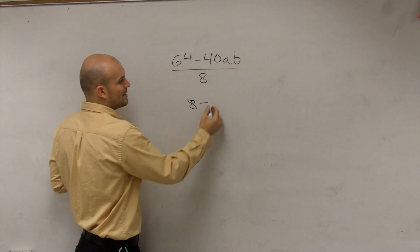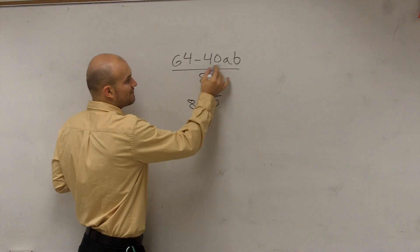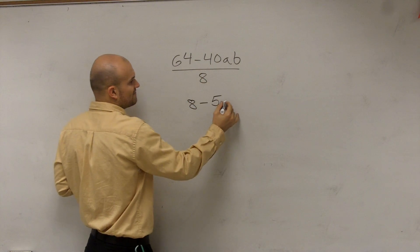And then 40 divided by 8 is 5. I'm sorry, 40AB divided by 8 is 5AB.